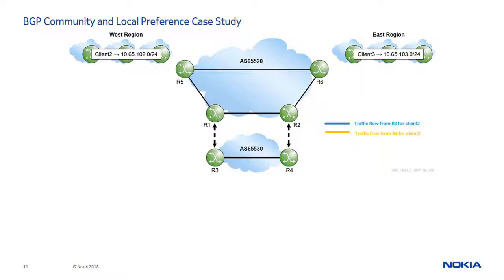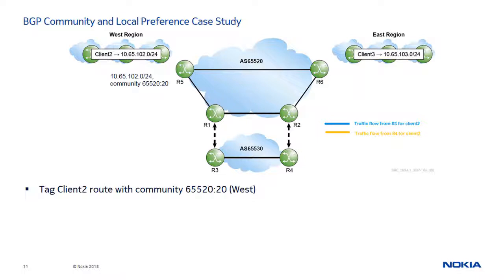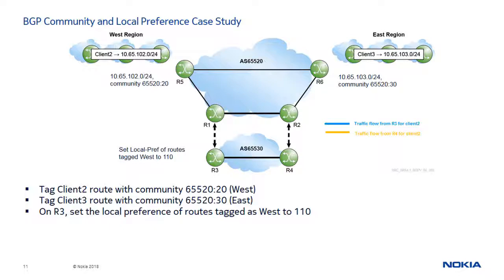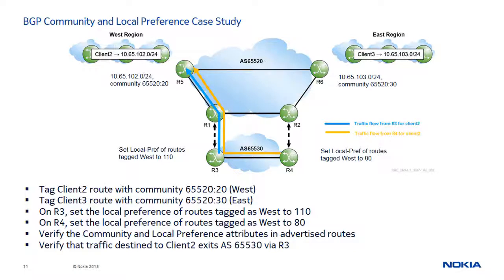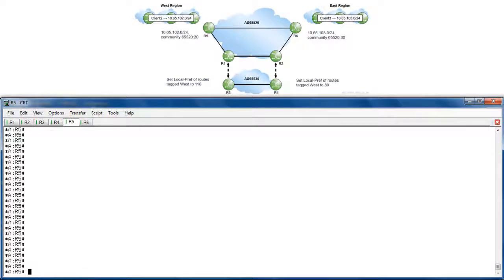Next, we will move to our lab environment to complete this case study. BGP is enabled in and between the ASs. On R5, we will tag client2 routes with community 65520:20, which identifies routes in the west region. And on R6, we will tag client3 routes with community 65520:30, which identifies routes in the east region. On the entry border routers R3 and R4, we will then implement a local preference import policy where R3 sets the local preference of routes tagged as west to 110, and R4 sets it to 80. We will inspect the community and local preference attributes in advertised routes and verify that traffic destined to client2 exits AS65530 via router R3. Let's start the lab.